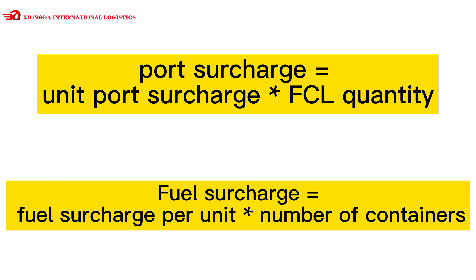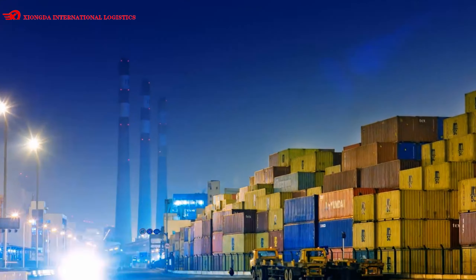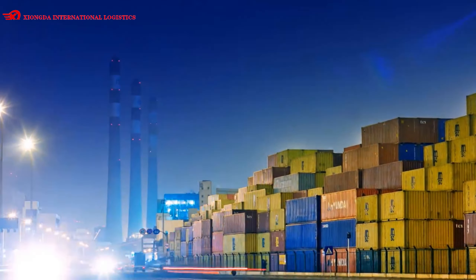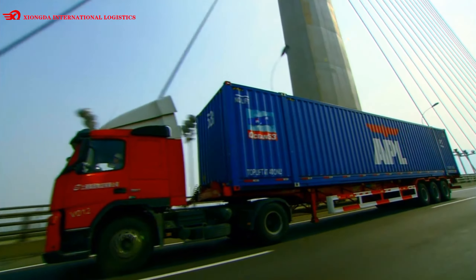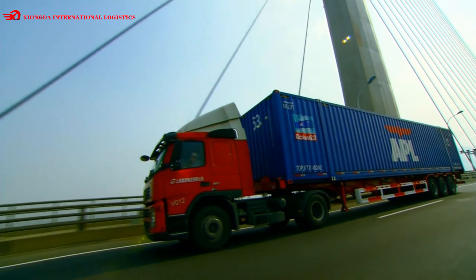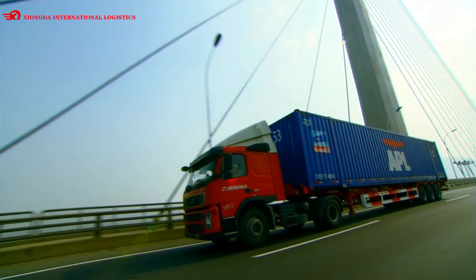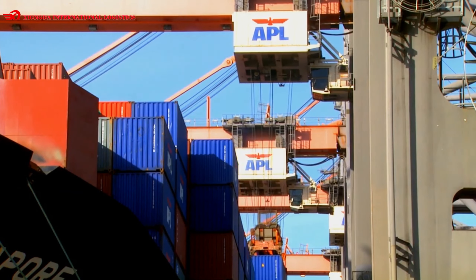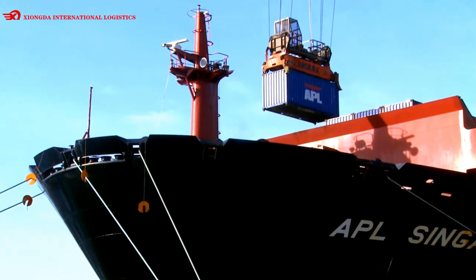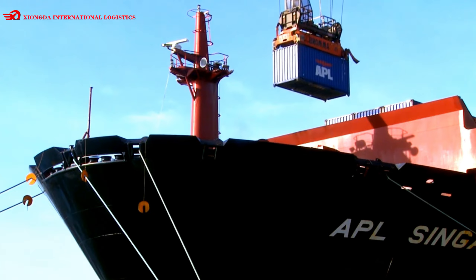Fuel surcharge equals fuel surcharge per unit multiplied by number of containers. The bill of lading is the only proof of title to the goods. After the goods are declared through customs, the freight forwarder will issue the bill of lading to the shipper.